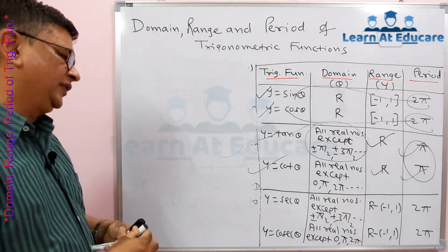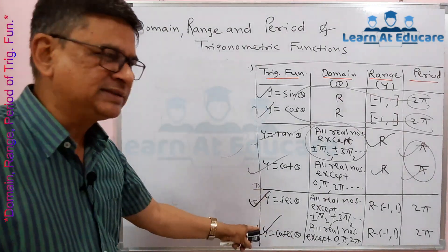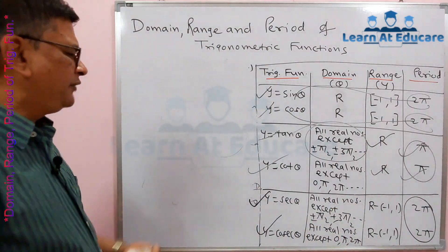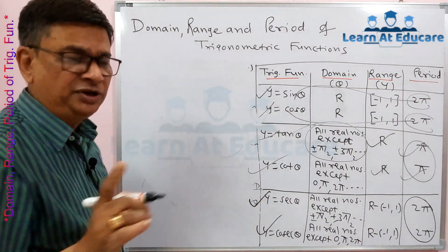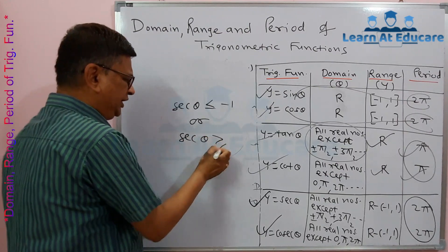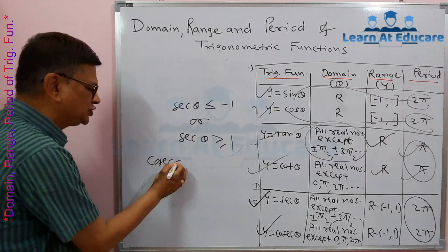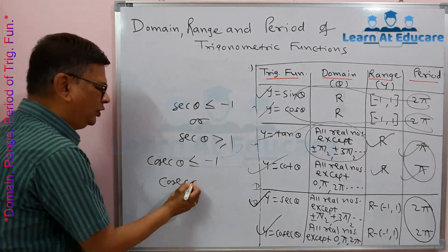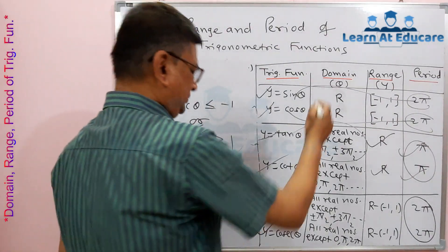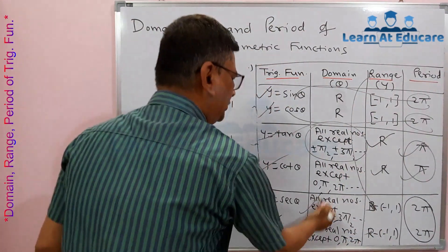For the last two functions, y = sec θ and y = cosec θ: they are reciprocals of cos θ and sine θ respectively. Their period, like sine and cosine, is 2π. Importantly, sec θ never takes values between −1 and +1 — it is always either ≤ −1 or ≥ +1. Similarly, cosec θ is also either ≤ −1 or ≥ +1.